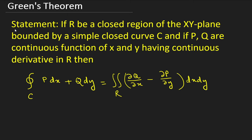So what is written in the statement: if capital R be a closed region of the xy plane bounded by a simple closed curve C. Suppose there is a closed curve — this is a closed curve and the region bounded by this C is R.